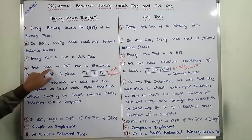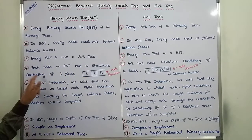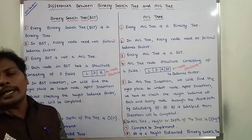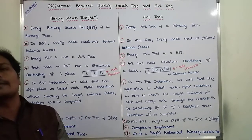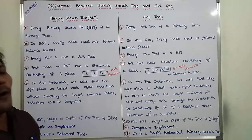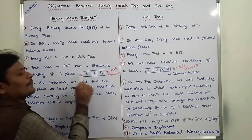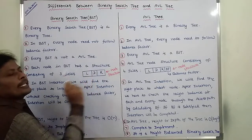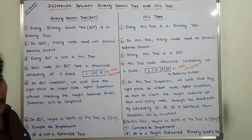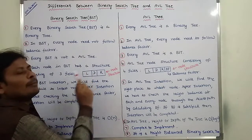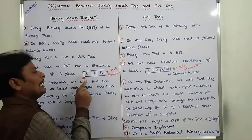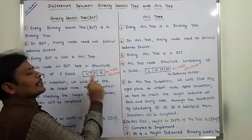Fourth point: each node in the BST has a structure consisting of three fields. Every node in the binary search tree has a node structure with three fields: one is the left subtree field, second is the node value (data field), and third is the right subtree field.